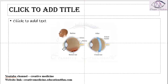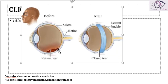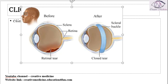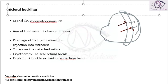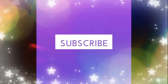Here, you can see the tear, and because of this tear the fluid has entered into the sub-retinal space. We first close the tear and then place a scleral buckle so the retina remains adherent in its original position. This is scleral buckling in retinal detachment — thank you for watching.